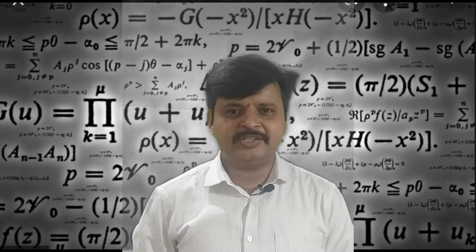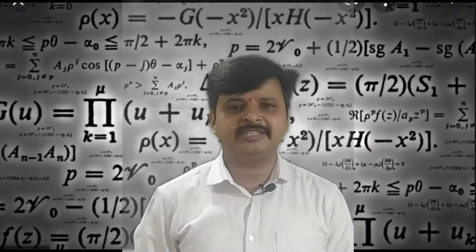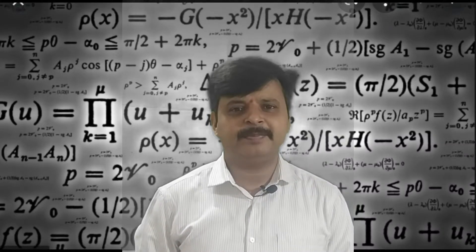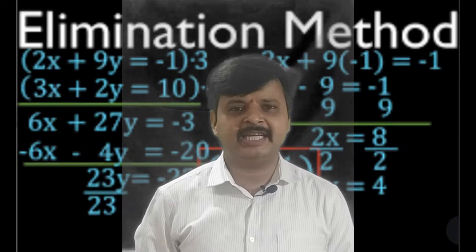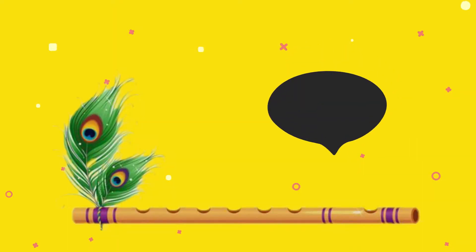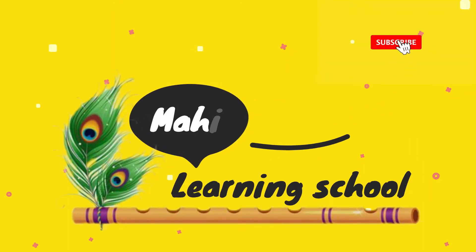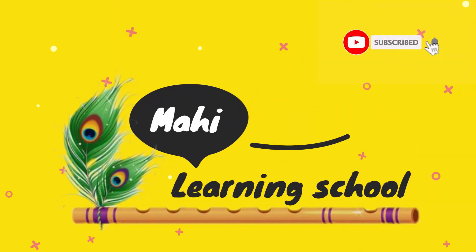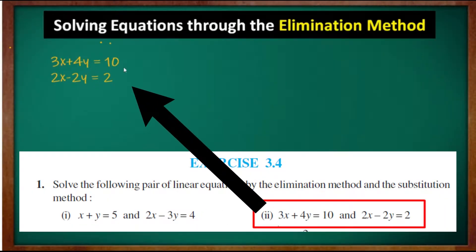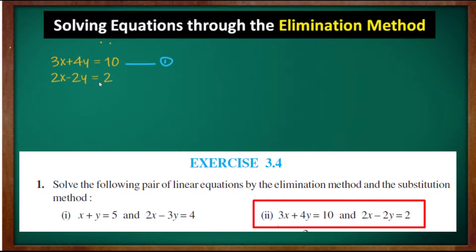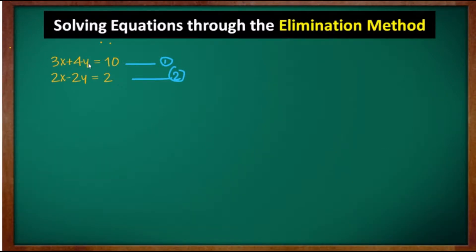Hello friends, in this video we are going to discuss Exercise 3.4 from Pair of Linear Equations in Two Variables. We will solve the problems using the elimination method. We have two equations: 3x + 4y = 10 (first equation) and 2x - 2y = 2 (second equation).